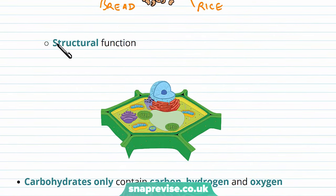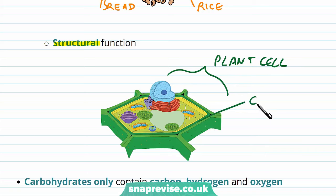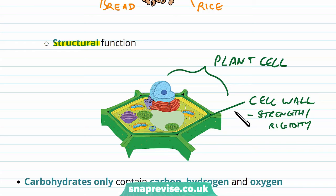Carbohydrates also have a structural role in particular cells. Here we have a plant cell, and plant cells all have a feature around their perimeter known as the cell wall. This cell wall structure adds strength and rigidity to the cell, and this property allows plants to stand upright and grow very tall.